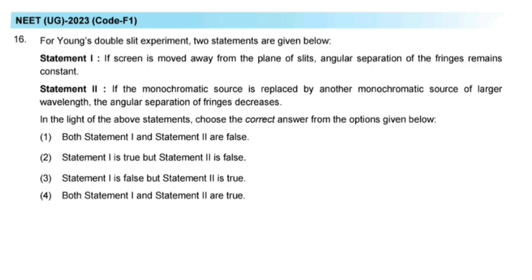Statement 2: If the monochromatic source is replaced by another monochromatic source of larger wavelength, the angular separation of fringes decreases. In the light of the above statements, choose the correct answer from the options given below.